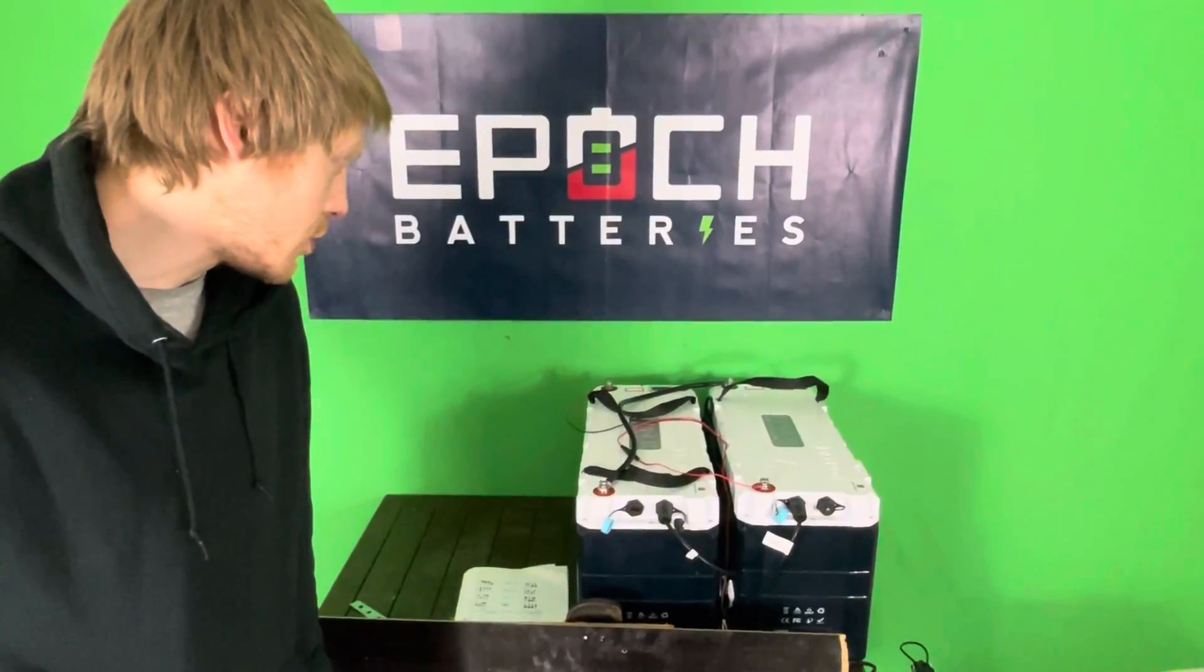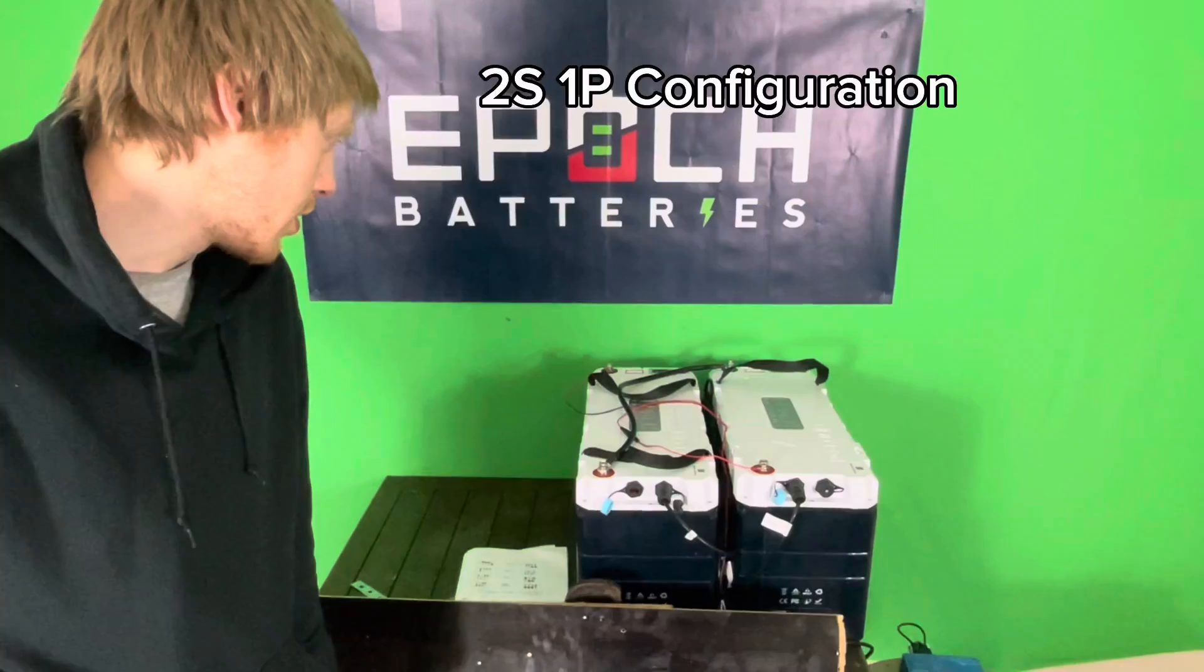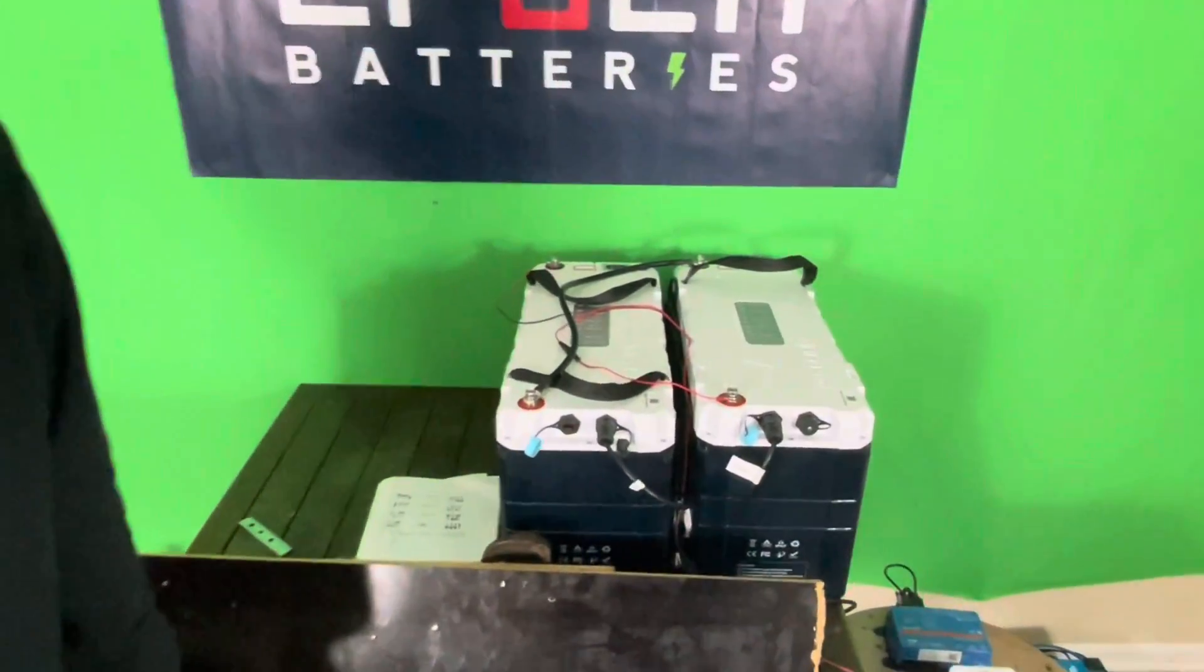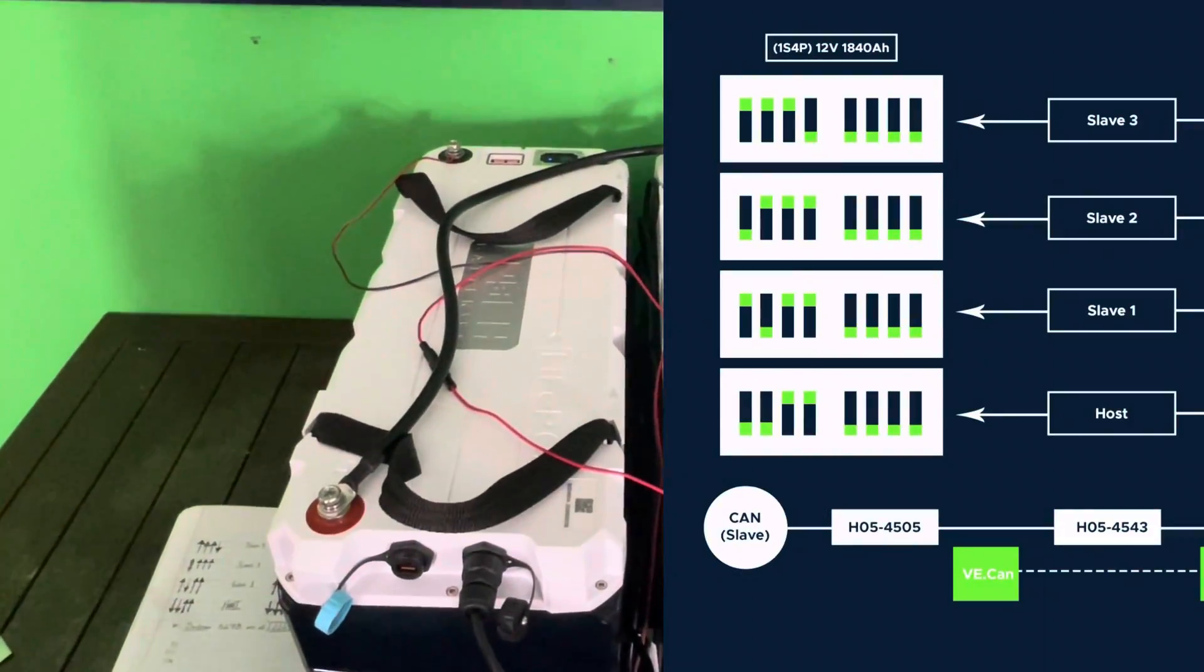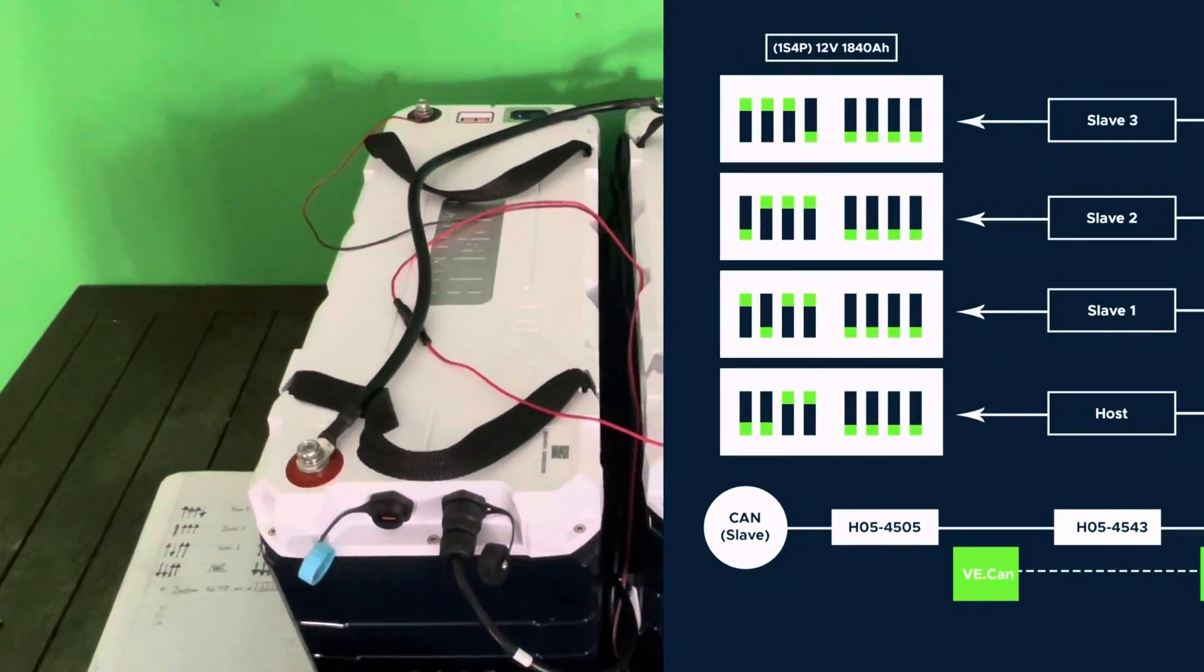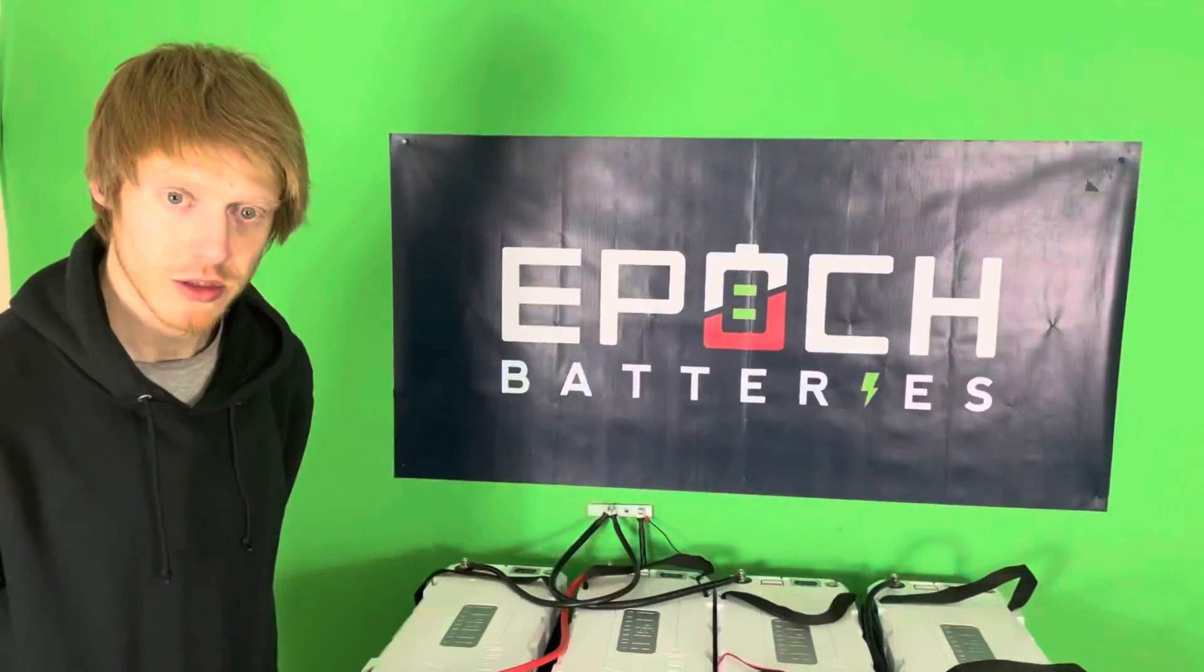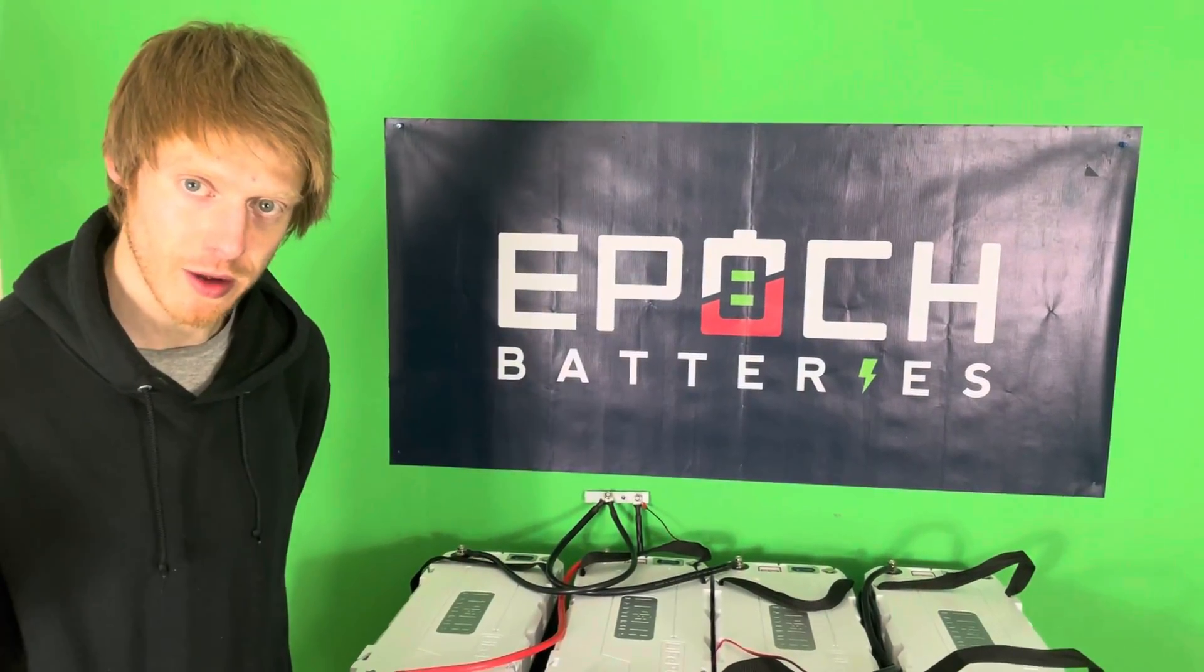Alright, so now for the 2S1P configuration. So we have a 24-volt battery, 460 amp-hour, wired in series. Dip switch settings as seen on the screen, and that's seen on the Cerbo and we have the 24-volt battery. So that's all for this configuration and now on to the next.